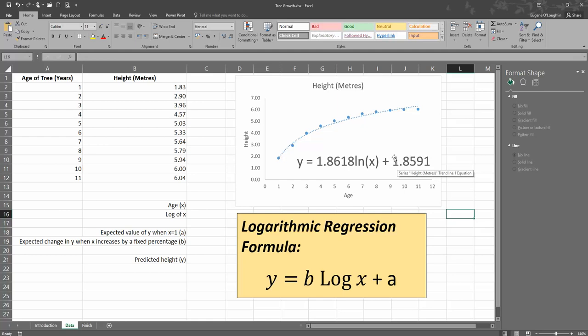And then plus the value for a. And remember, that's the expected value of y when x is 1, and we can see that that's 1.8593. In fact, if you look at the chart here, a value for 1, age of 1 year old, if you extrapolate upwards and move left, it'll be just underneath the value of 2, and the actual value is 1.8591.